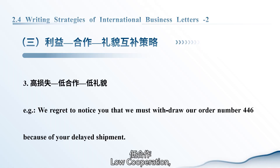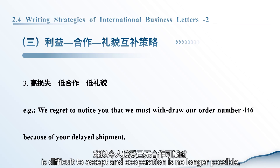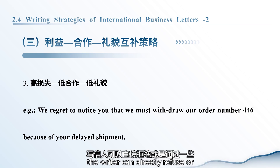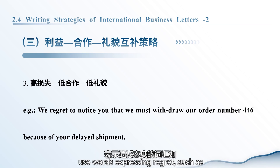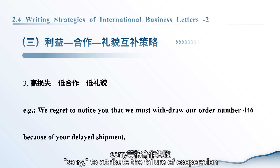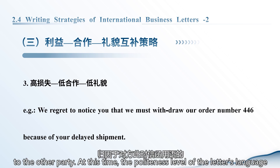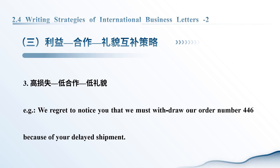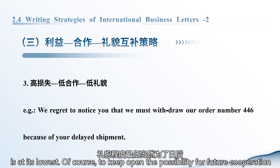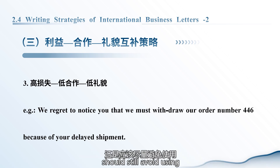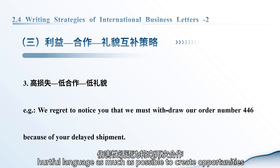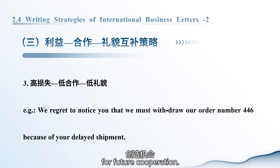High loss, low cooperation, low courtesy: when the other party's request is difficult to accept and cooperation is no longer possible, the writer can directly refuse or use words expressing regret, such as 'regret' or 'sorry,' to attribute the failure of cooperation to the other party. At this time, the politeness level of the language is at its lowest. Of course, to keep open the possibility for future cooperation or out of courtesy, the writer should still avoid using hurtful language as much as possible to create opportunities for future cooperation.